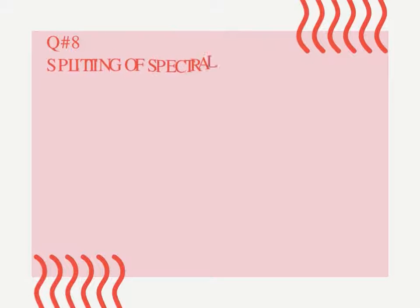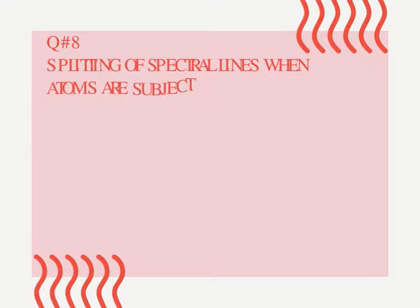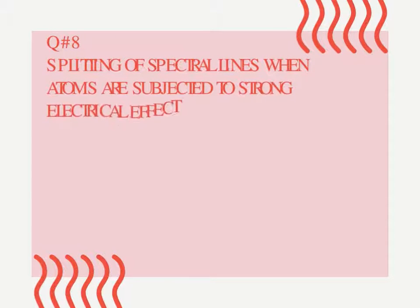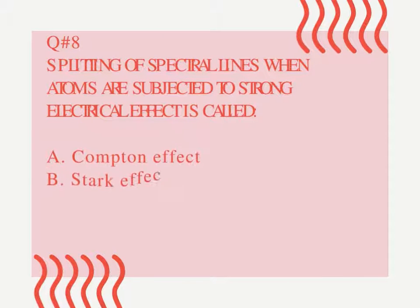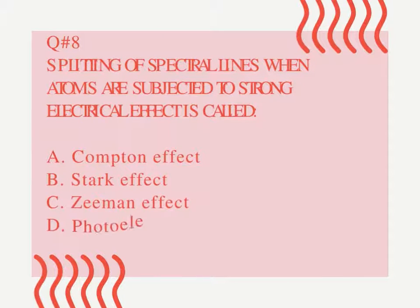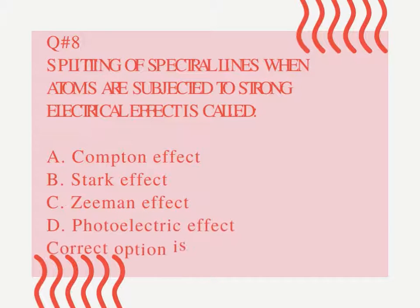Question number 8. Splitting of spectral lines when atoms are subjected to a strong electrical effect is called: A. Compton effect. B. Stark effect. C. Zeeman effect. D. Photoelectric effect. Correct option is B.